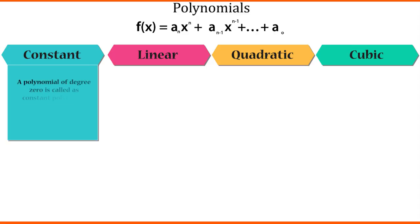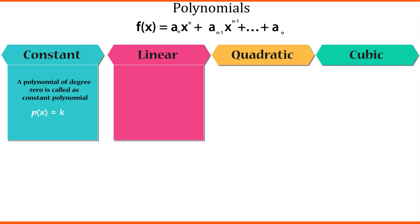A polynomial of degree 0 is called a constant polynomial and it is in the form of P of x equals k. Whereas polynomial of degree 1 is called a linear polynomial. It is in the form of P of x equals ax raised to 1 plus b.